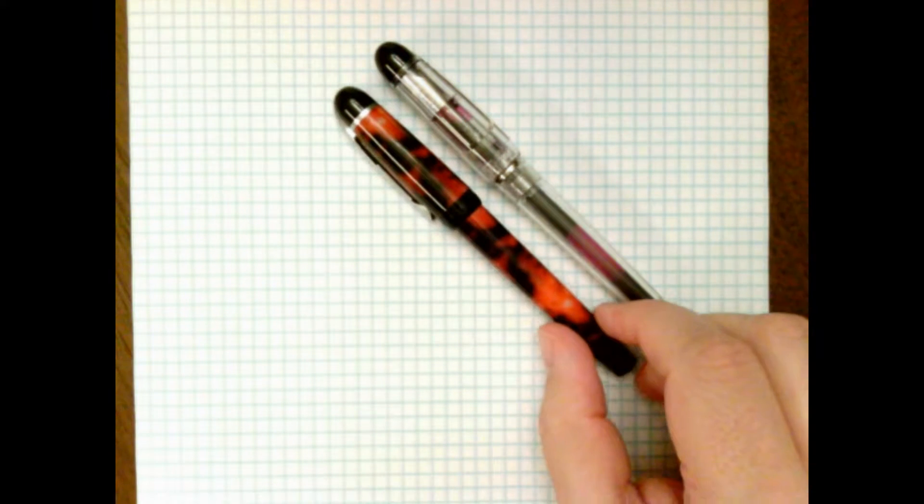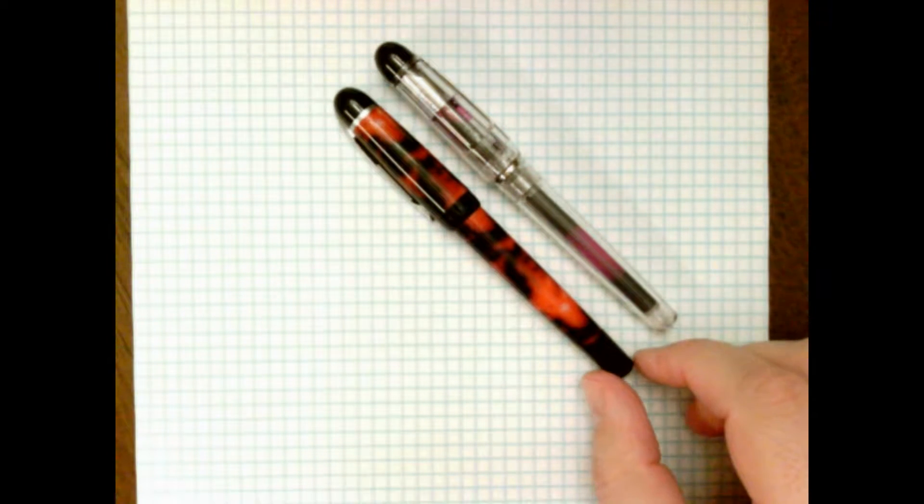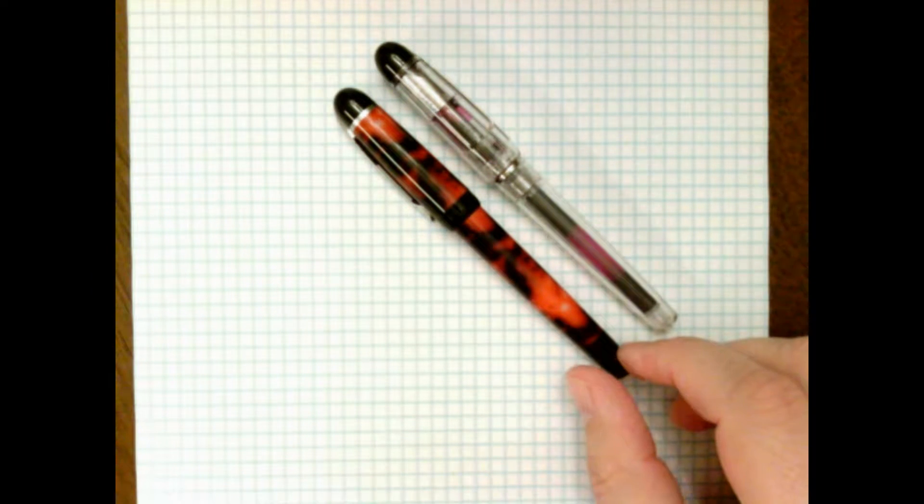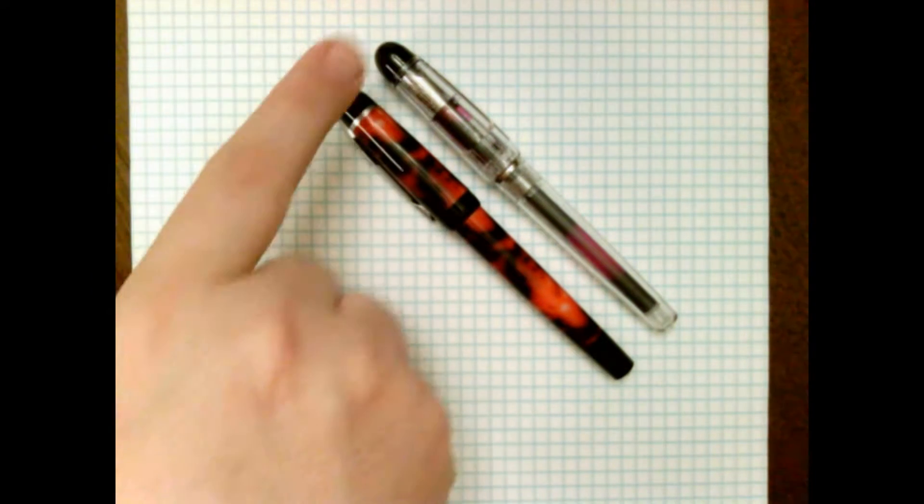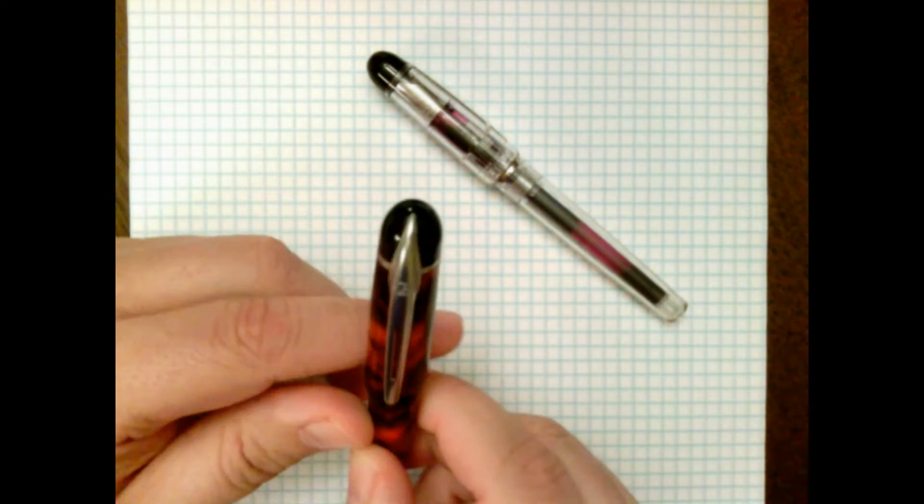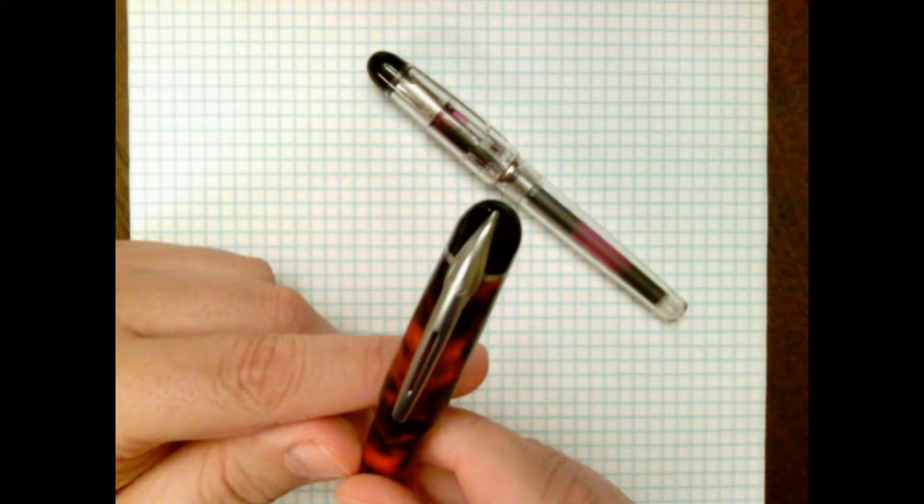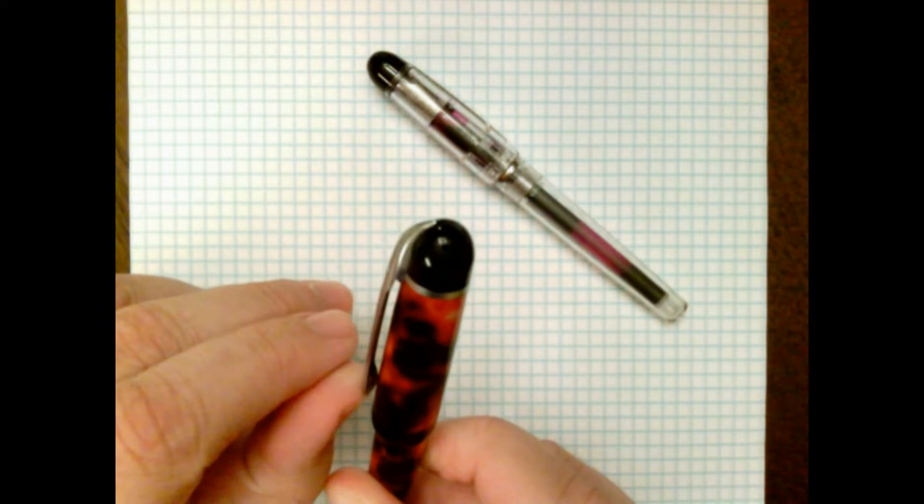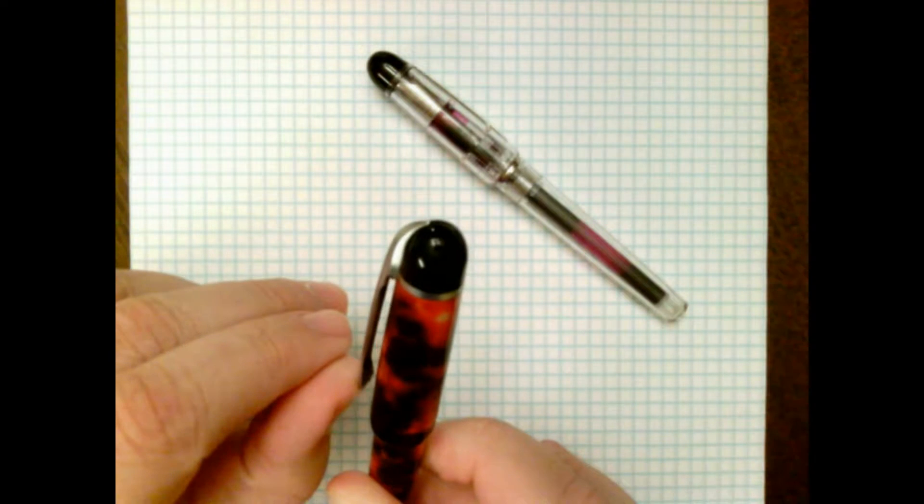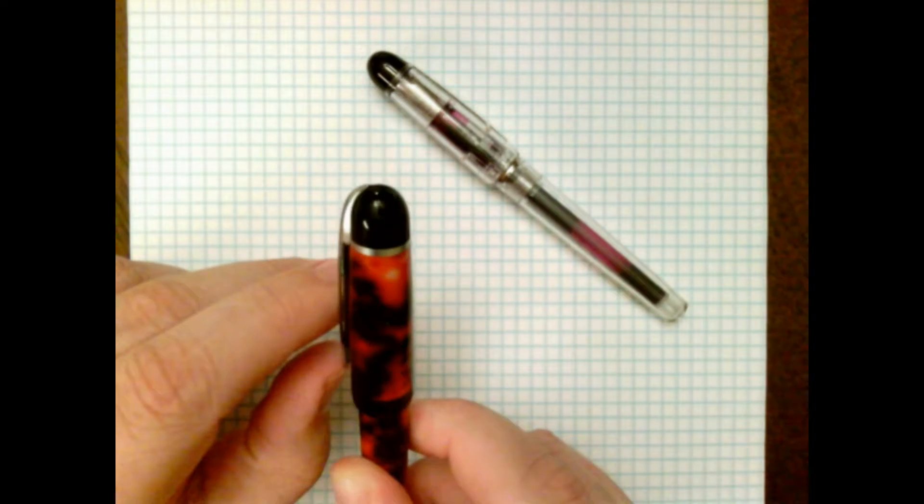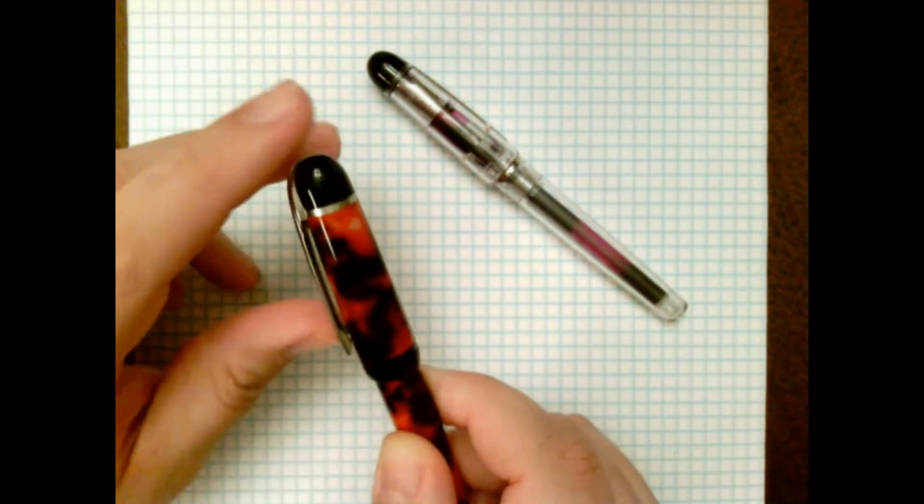As you can see, they're pretty much exactly the same size and basically the same shape. They have a lot of things in similar there, the black caps at the top, each of which has this sort of spring-loaded clip that goes into the top of the pen there. And that's spring-loaded into the cap. It doesn't move much, but it moves very easily. And so that works very well on a pocket or whatever.